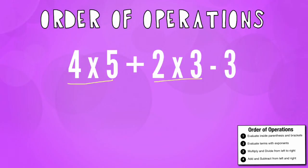So, 4 times 5 is 20 plus 2 times 3 is 6 minus 3. Now we're at addition and subtraction. Remember, we go left to right. So we must first do the 20 plus 6 is 26 minus 3 and that will give us our answer of 23.